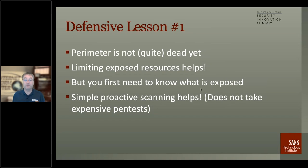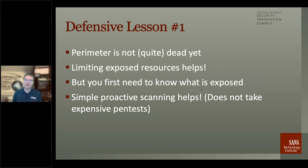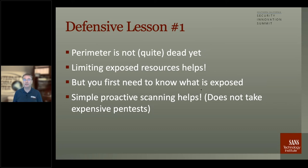Going back to the perimeter not being quite dead yet — limit what's being exposed. If you do need to expose an administrative system, try to limit at least what IP addresses can connect to it. You may not have a static IP at home, but maybe you can use a cloud jump-off point that you connect to first, and from that you connect to your admin system. There are a number of ways to harden the remote access administrative function. And it certainly helps to scan for it yourself — don't be afraid; if it would crash, it would have already been crashed by all the attackers constantly scanning it.